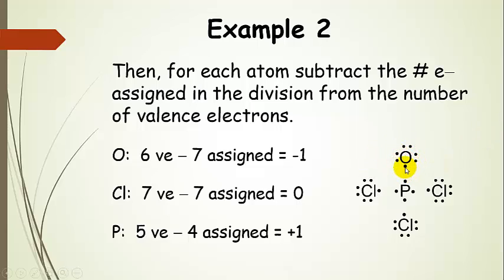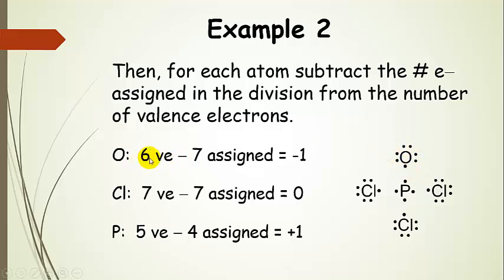After breaking the bonds, oxygen got one electron from the bond and phosphorus kept one from each bond. Each chlorine kept one from each bond as well. For oxygen: it has six valence electrons on the periodic table, and we subtract seven assigned — oxygen already had three lone pairs (six electrons) plus one from the bond division, making seven. So oxygen's formal charge is minus one.